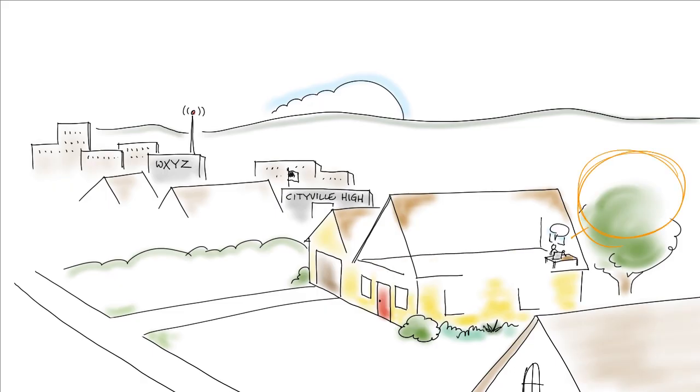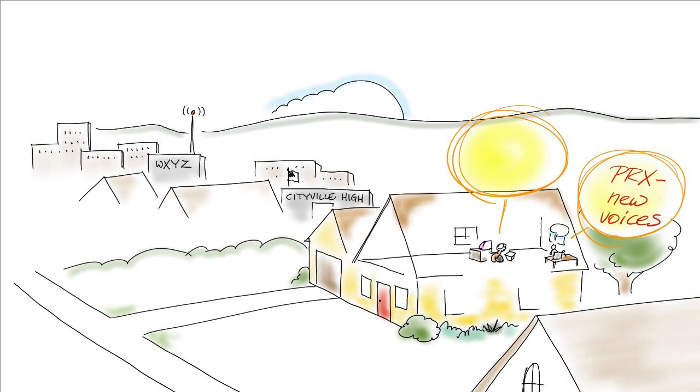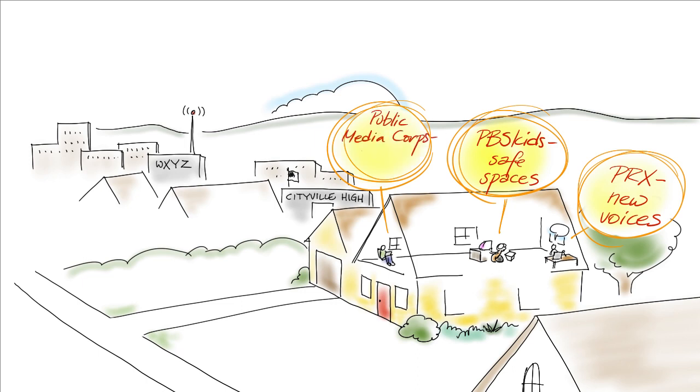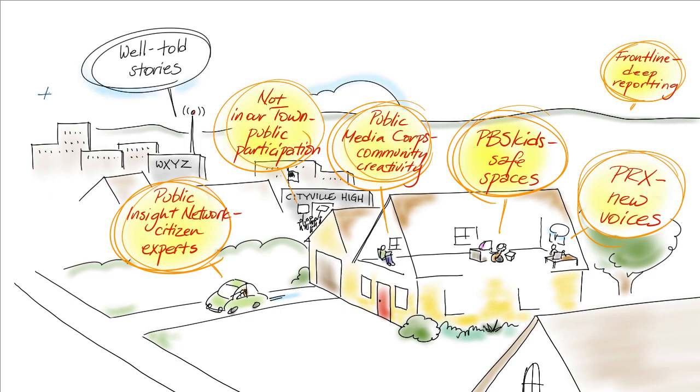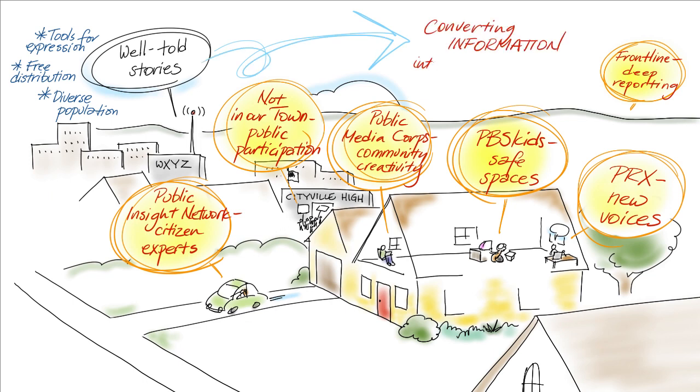What the Cardozo family scenario shows is how the public broadcasting you grew up with can become part of a next-gen public media network, still focused on high-quality educational content, but also on local information and platforms for innovation. This is already happening in some places. Many public media institutions get it. They get that it's their job to provide well-told stories of interest to a diverse population, distribute them freely, and give people the tools to express their own perspectives. It is their job to help people convert raw information into real value in their lives.